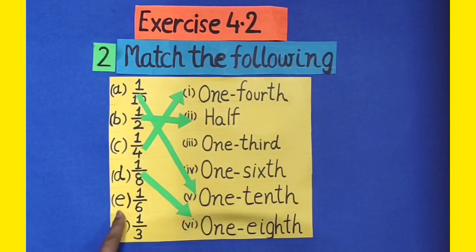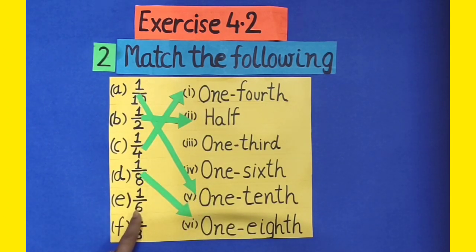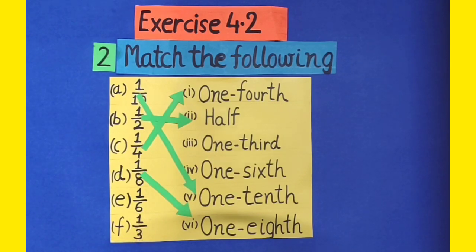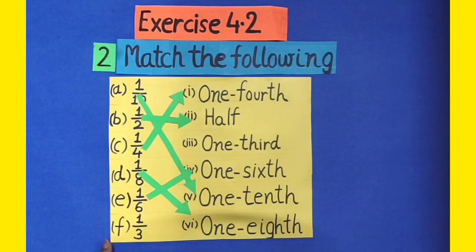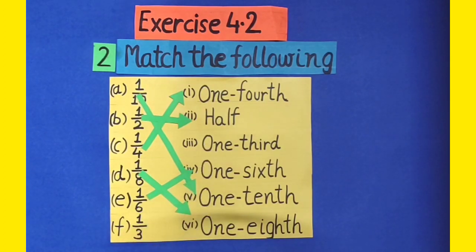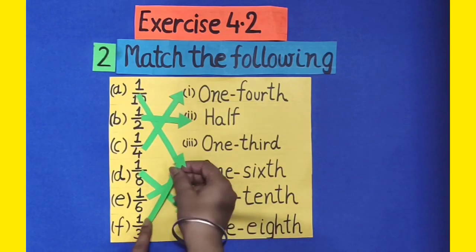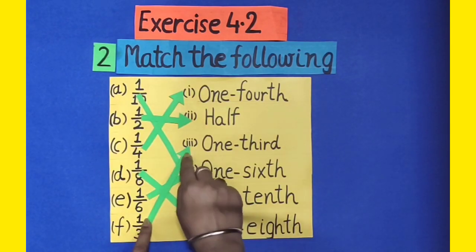Now in part E, 1 by 6. It can be written as 1 sixth. Let's match these two. Part F, 1 by 3. It can be written as 1 third. Let's match part F with part 3.